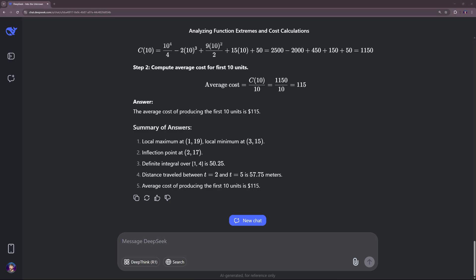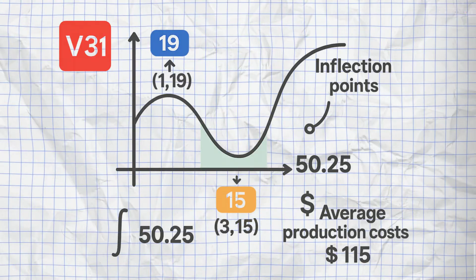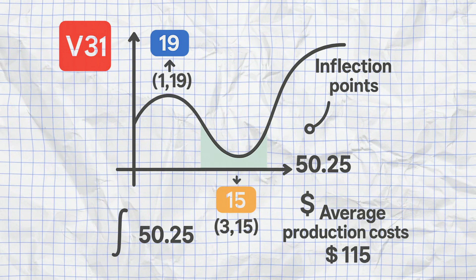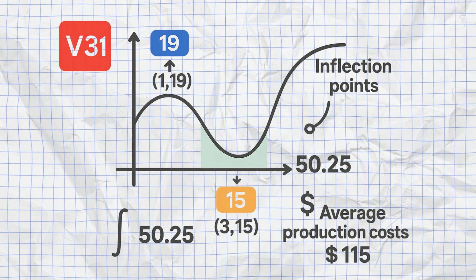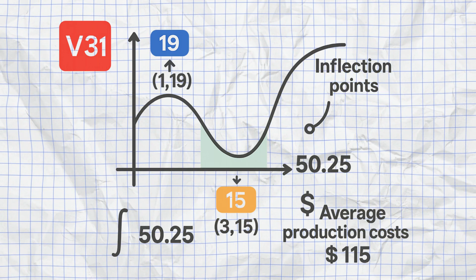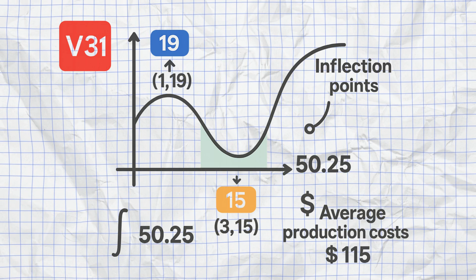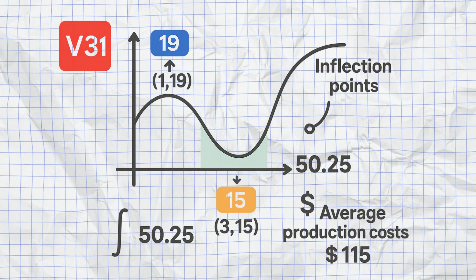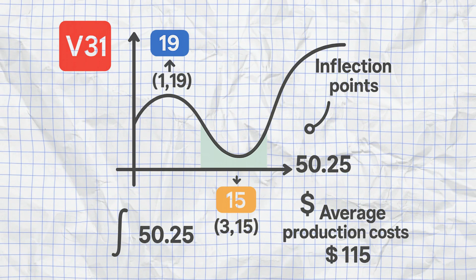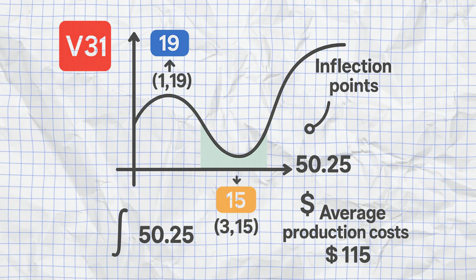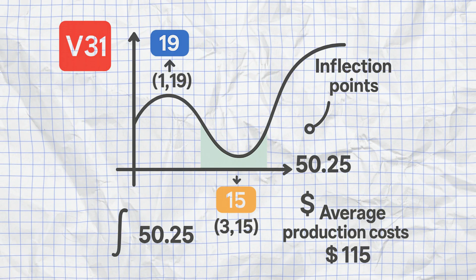For my own test, I deliberately chose a mathematical task — the analysis of a cubic function. V3.1 correctly identified the local maximum value at 1.19 and the minimum value at 3.15, the inflection points, the integral with the value 50.25, and even the demanding calculation of average production costs of $115. Everything was precisely calculated. What particularly impressed me: in a task to calculate a distance traveled, DeepSeek immediately recognized that we need to check the sign of the velocity — a detail that shows deep understanding of the underlying physics, not just pure mathematics.